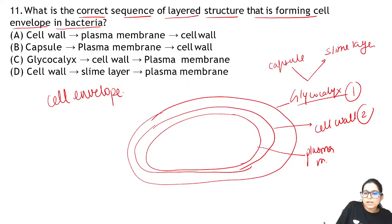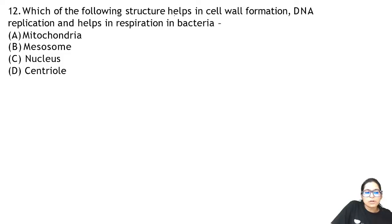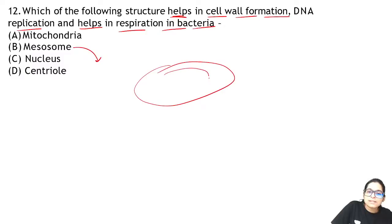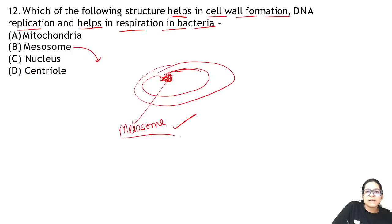Question 12: which structure helps in cell wall formation, DNA replication, and respiration in bacteria? The answer is mesosome. The plasma membrane of the cell forms in-foldings — these are called mesosomes. They help in cell wall formation, replication, and respiration in bacteria.